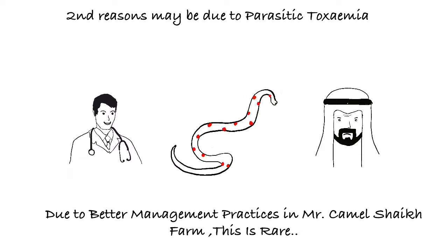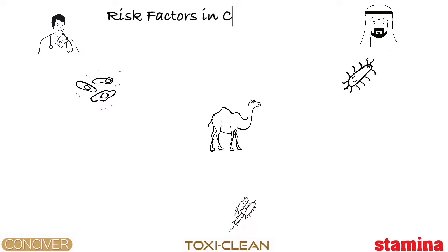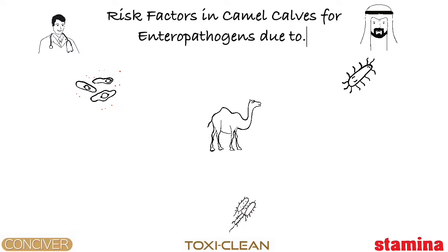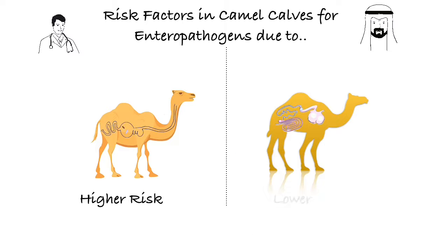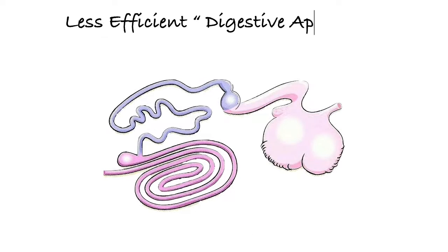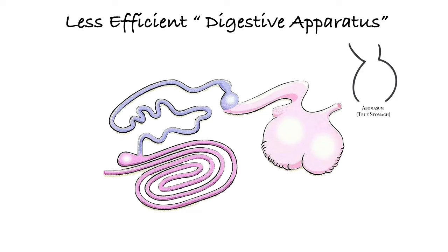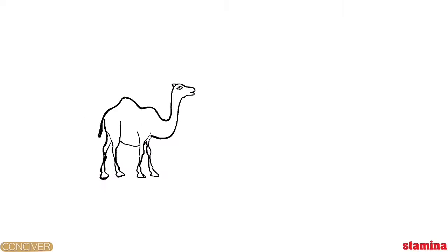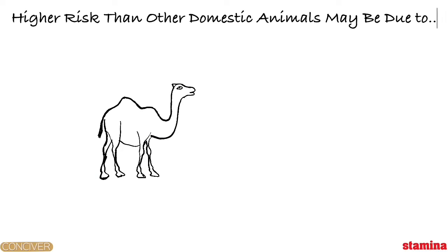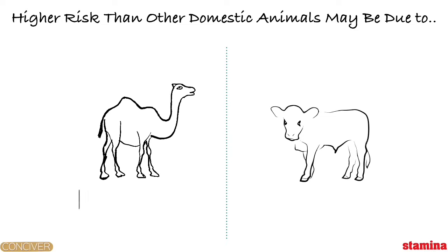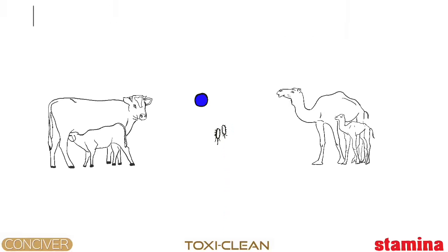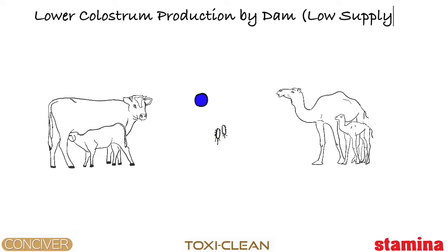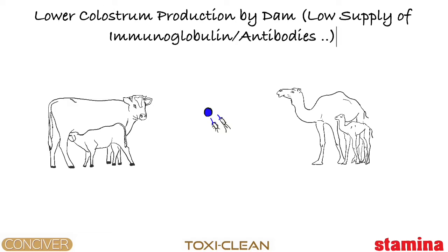The third reason is the higher risk of camel calves for enteropathogens due to a less efficient digestive apparatus than the adult one, and a higher risk than other domestic animals, possibly due to lesser colostrum production, which results in a lower supply of immunoglobulins or antibodies.